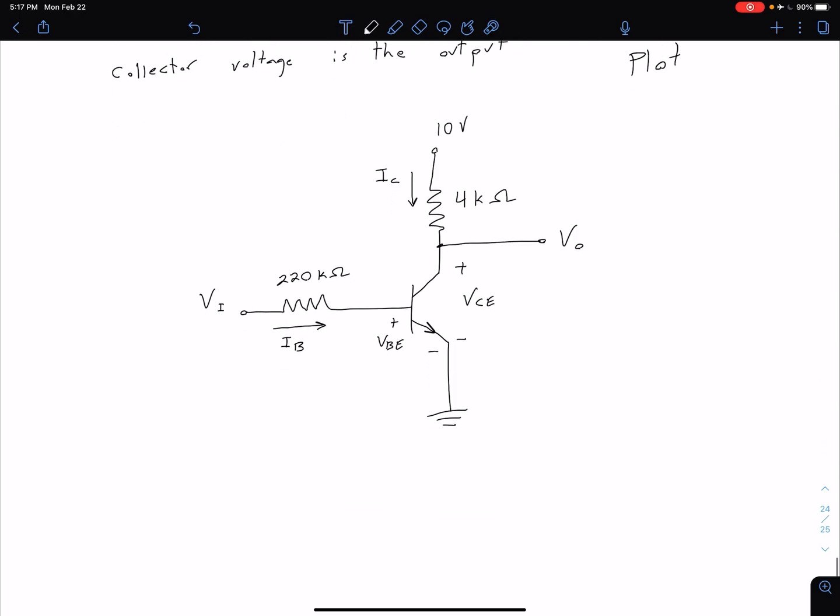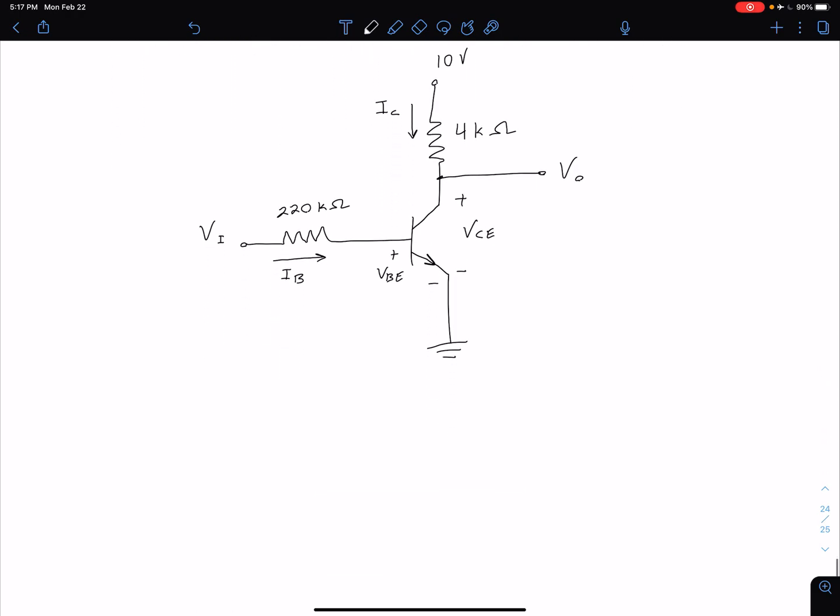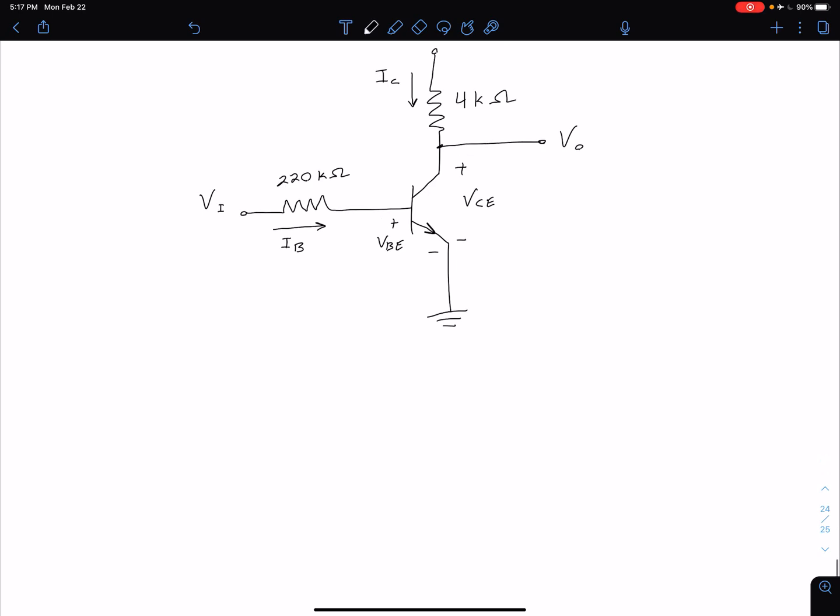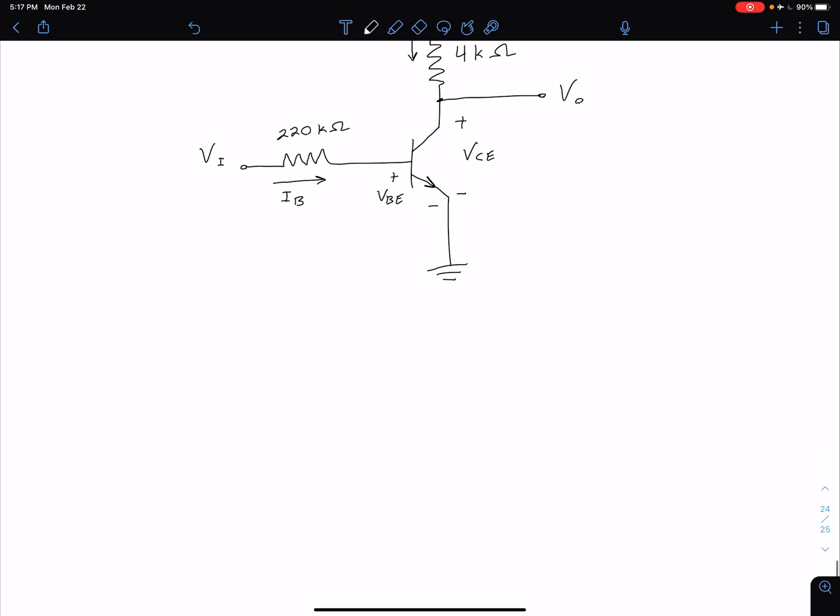Let's consider some key points as we demarcate between our cutoff, forward active, and saturation regions. First of all we can see that if this input voltage VI is too low it's not going to be able to bias that VBE junction such that it's on.